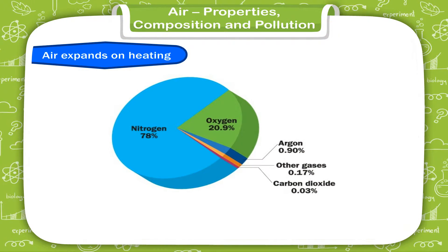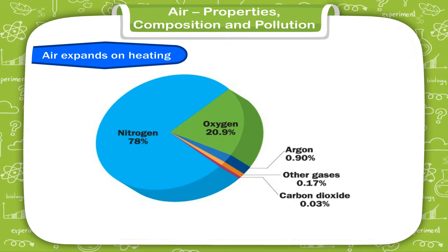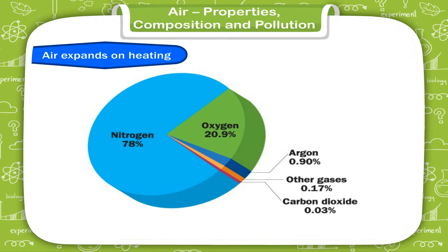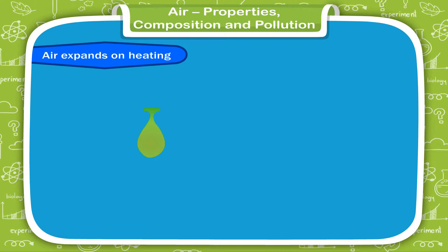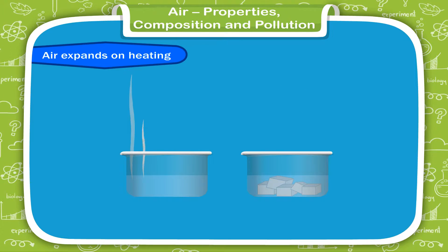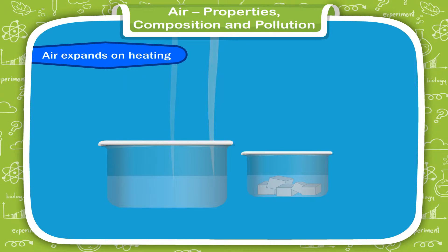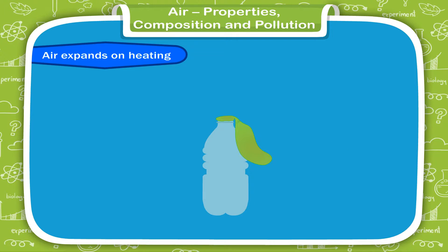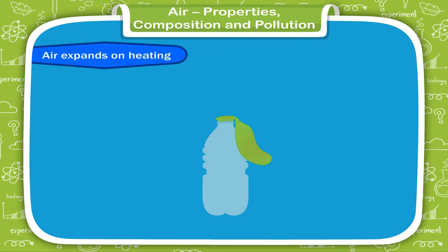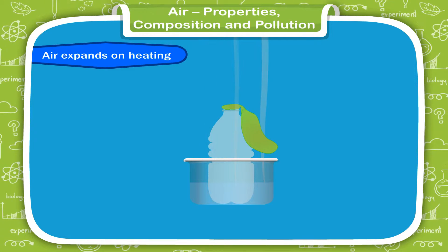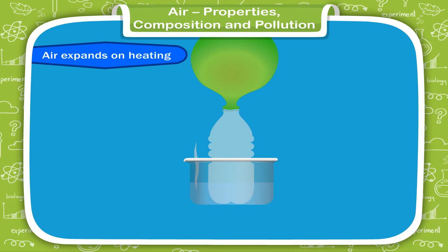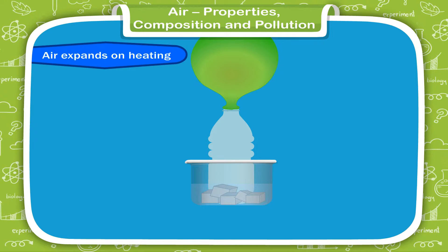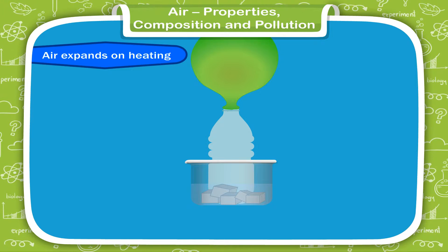Air expands on heating. Air is a mixture of gases and the molecules of gases are very loosely packed. This is the reason that gases expand when heated and become less dense. You will need a balloon and a plastic soft drink bottle, and two containers — one filled with hot tap water and the other with ice and cold water. Place the balloon over the mouth of the empty plastic bottle. Stand the bottle in the container filled with hot water. Wait a few minutes and notice the balloon start to inflate and expand. Then remove the bottle from the hot water and place it in the container with cold water and ice. Wait a few moments and notice that the balloon starts to deflate and contract.